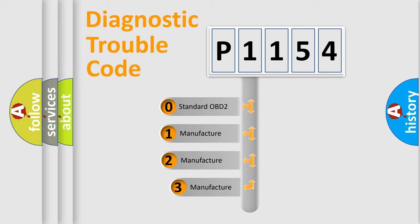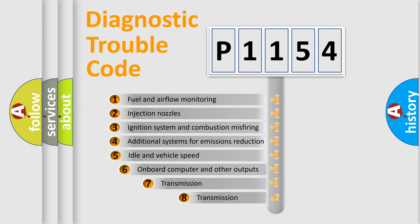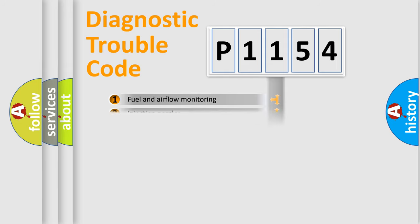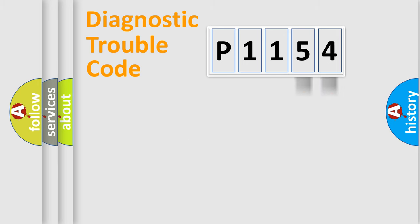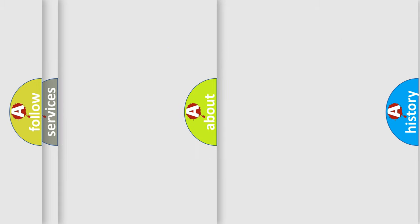If the second character is expressed as zero, it is a standardized error. In the case of numbers 1, 2, or 3, it is a manufacturer-specific expression of a car-specific error. The third character specifies a subset of errors. This distribution is valid only for the standardized DTC code, where only the last two characters define the specific fault of the group. Such a division is valid only if the second character is expressed by the number zero.